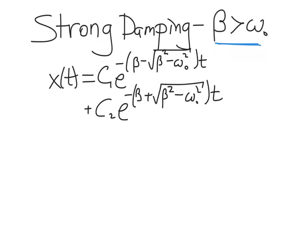The solution for a strongly damped oscillator is the sum of two exponential terms: e^(−something·t) + e^(−something·t). Each coefficient multiplying t is negative, so both exponential expressions are decaying. This is just two exponentially damping expressions — there are no sines or cosines, meaning there's no oscillatory motion at all.